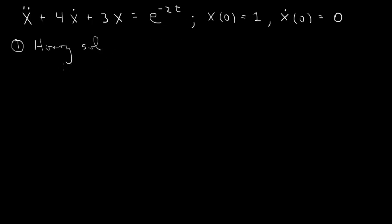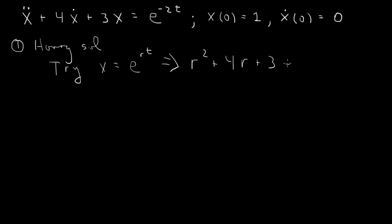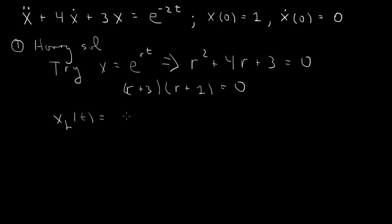With the right-hand side set to 0, to find the homogeneous solution you try x equals e to the rt. Cancelling e to the rt gives us the characteristic equation r squared plus 4r plus 3 equals 0. This factors — 3 times 1, and 3 plus 1 is 4 — so we have (r+3)(r+1) equals 0, giving roots minus 3 and minus 1. The homogeneous solution is then c1 times e to the minus 3t plus c2 times e to the minus t.